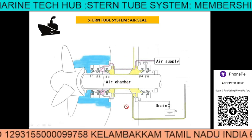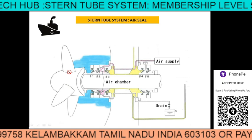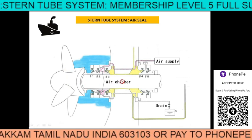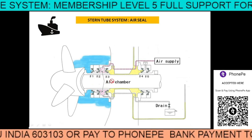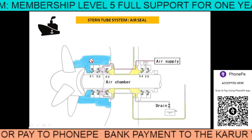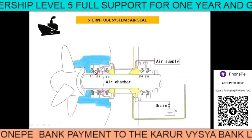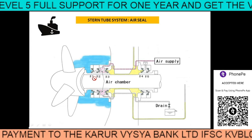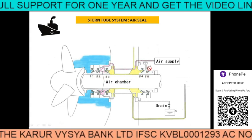In this picture you can see the propeller of the ship and this is the shaft which is driven by the engine. This will be rotating. The blue color is the sea water and you can see we have got sealing rings 1, 2, 3, 4 and 5.